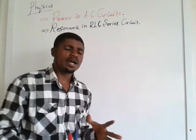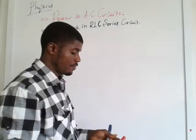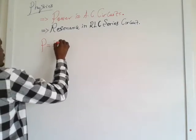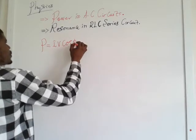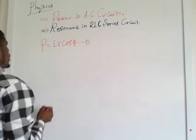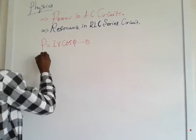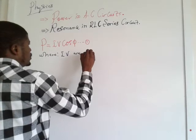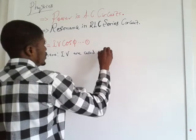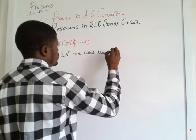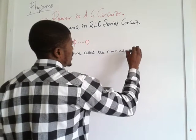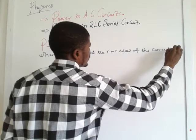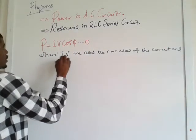The average power in AC circuits is given mathematically as P equals I·V·cos φ. Let's call this equation number 1. Where I and V are called the root mean square values of the current and the voltage.